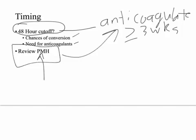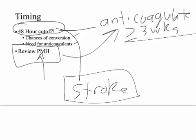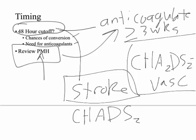Whether we use anticoagulants for a first-time AFib within 48 hours depends on stroke risk. If over 48 hours, anticoagulate for three weeks. If less than 48 hours, go ahead with cardioversion, but you can still anticoagulate based on stroke risk. Stroke risk is assessed with the CHADS2 or the CHA2DS2-VASc scoring systems, which determine how likely the patient is to have a stroke.